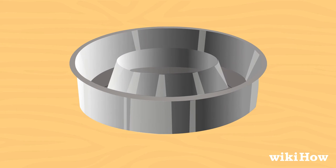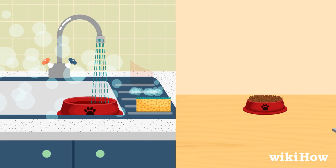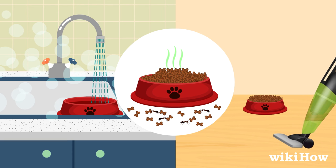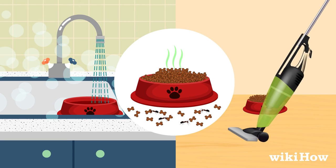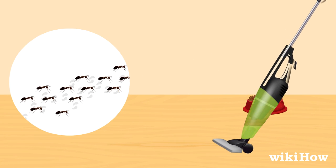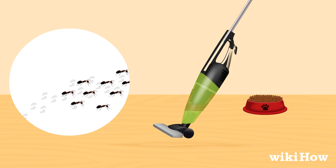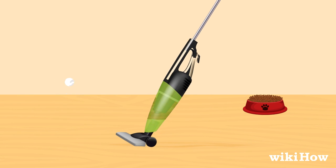You can also buy ant-proof food dishes for either indoor or outdoor use. Clean your pet's food dishes and the area around them frequently since ants are attracted to spilled food and food odors. Regular cleaning will also destroy scent trails that the ants have left behind during previous visits to the feeding area.